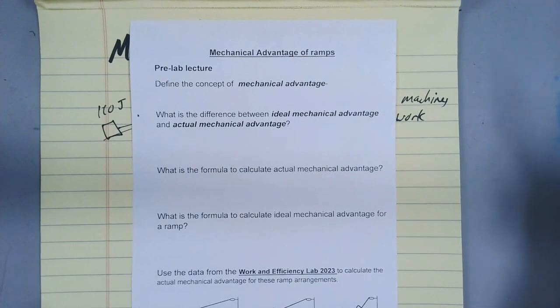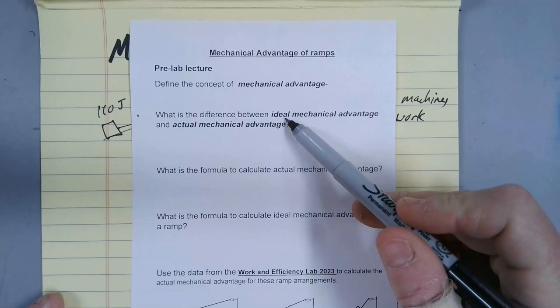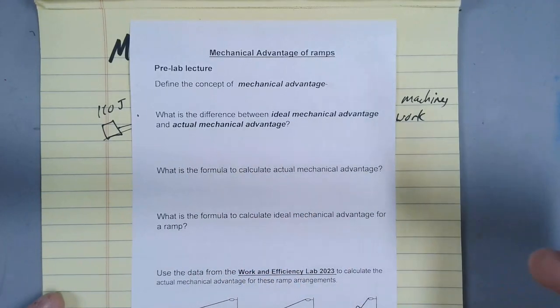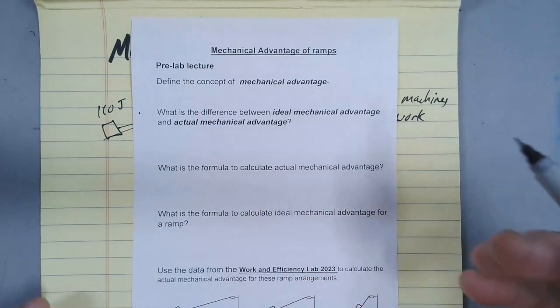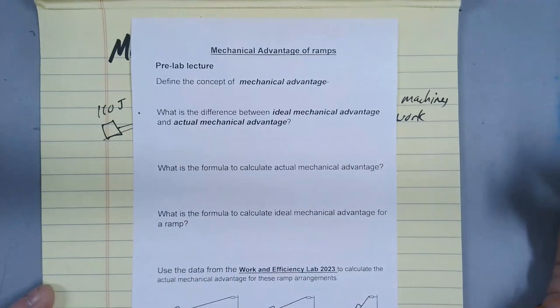With mechanical advantage, there's two different concepts. There's the idea of ideal mechanical advantage and actual. And I think you can kind of get an idea of what this means. Ideal means best case scenario. Actual means what do you really get?